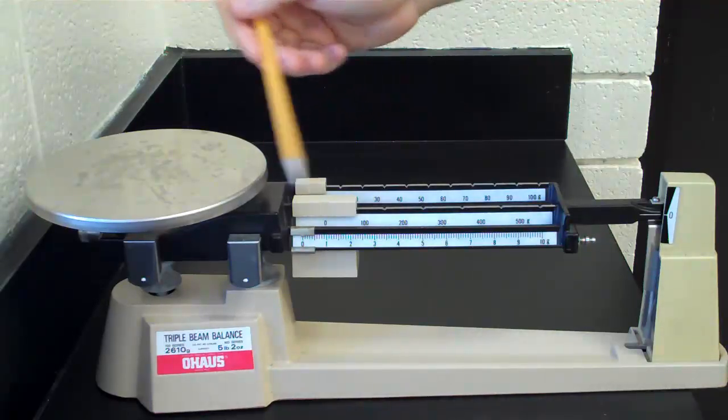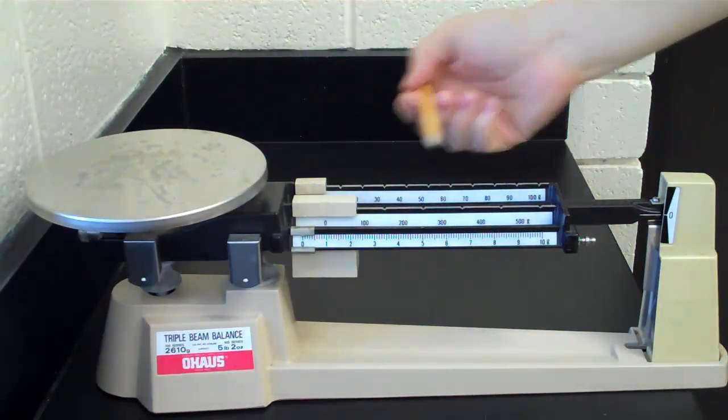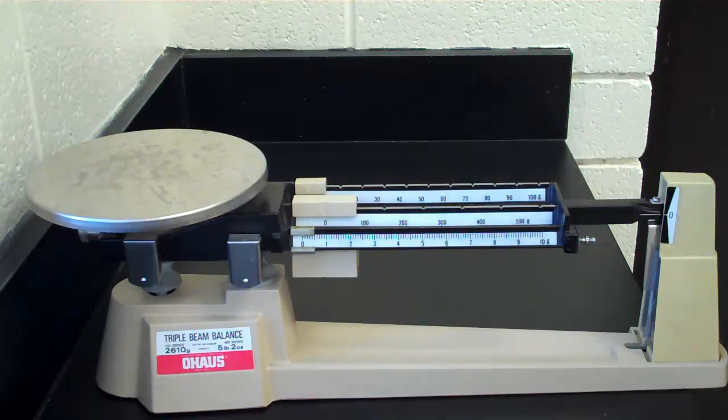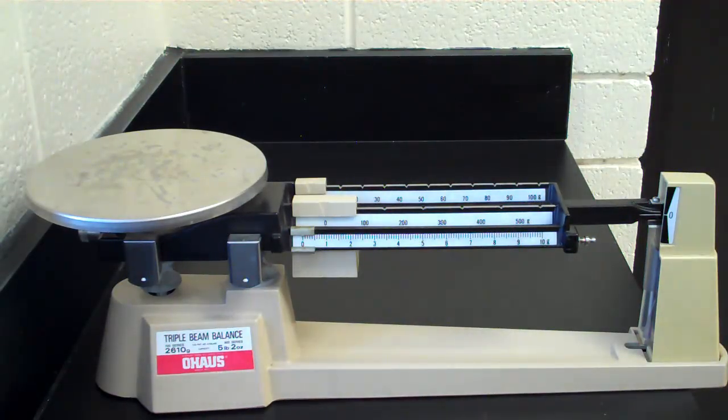Before checking the white line, we want to make sure that all of our weights are slid over all the way to the left. So now we've got that set up, we can use that and get an accurate recording.